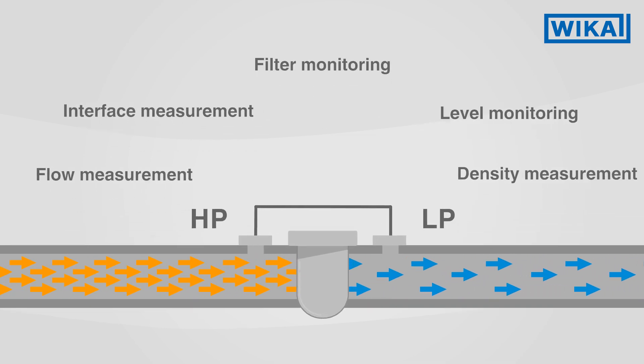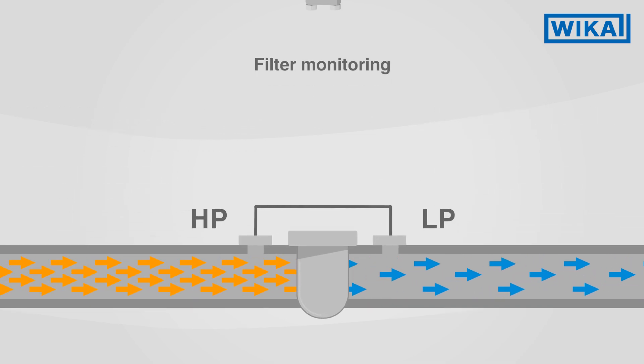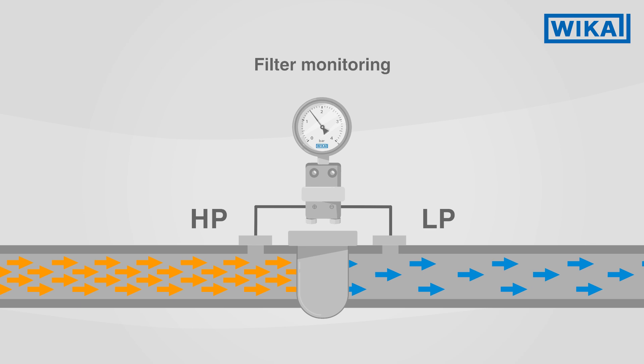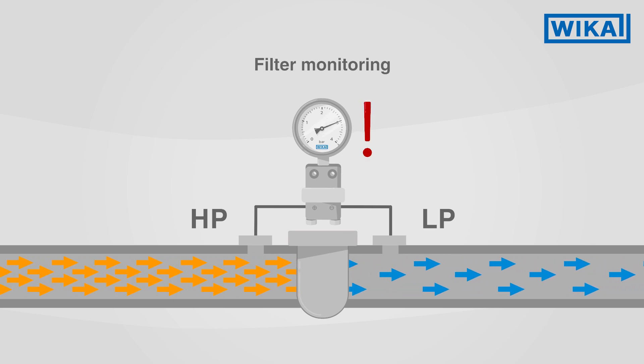An example is filter monitoring. If the measured value is different, this indicates that the filter must be checked.